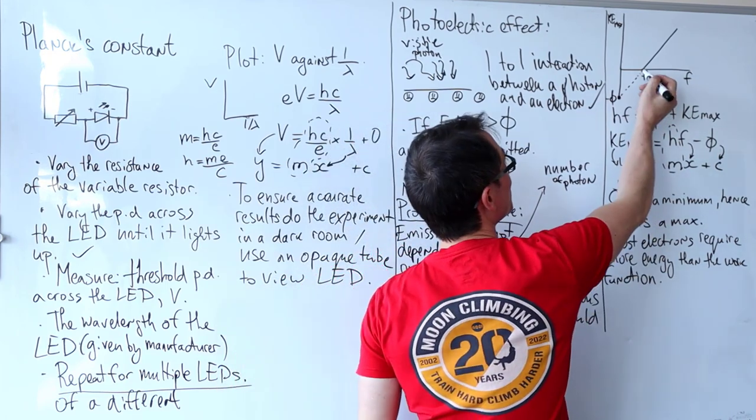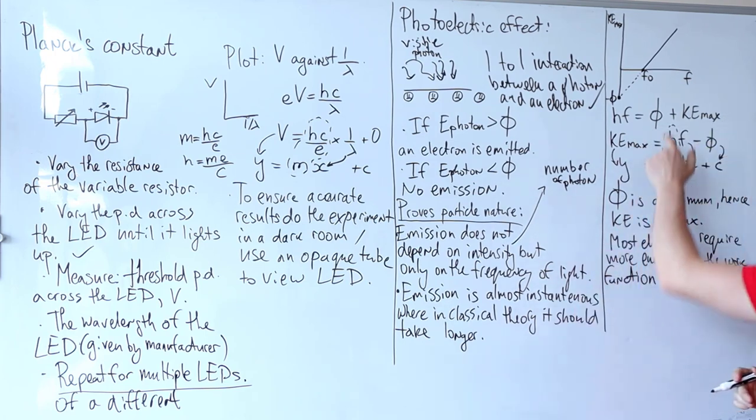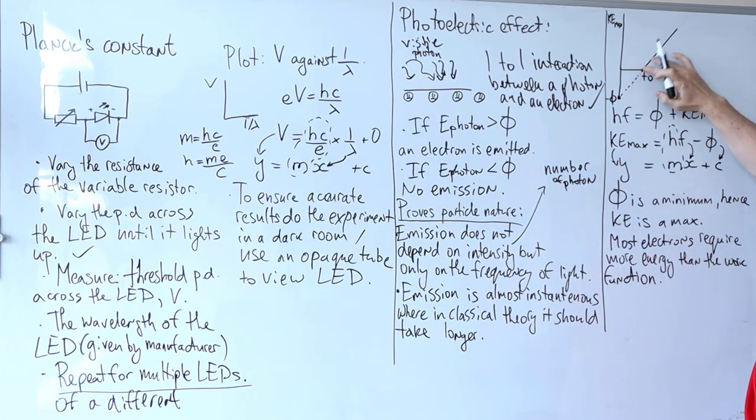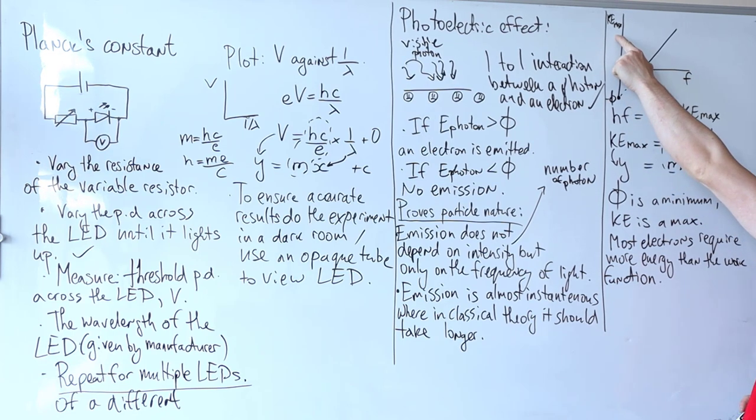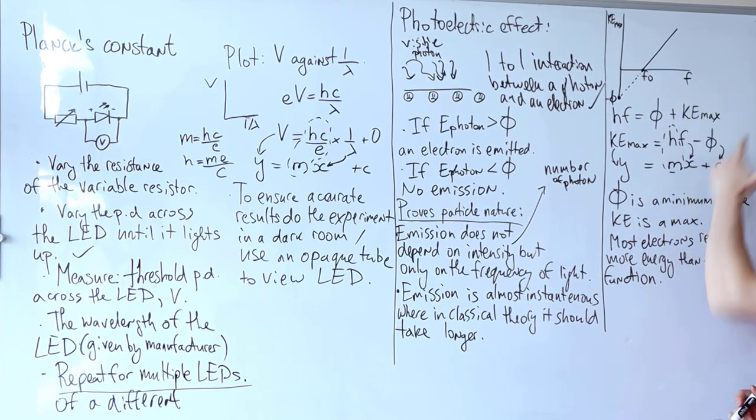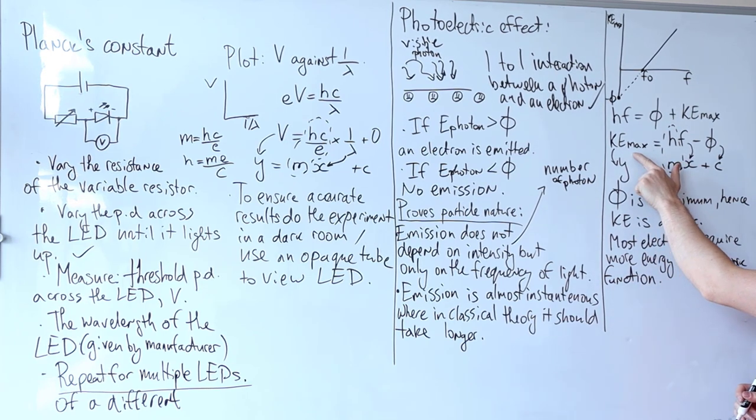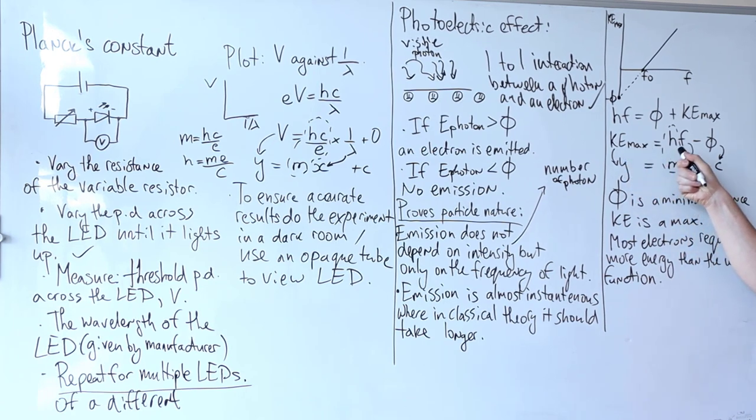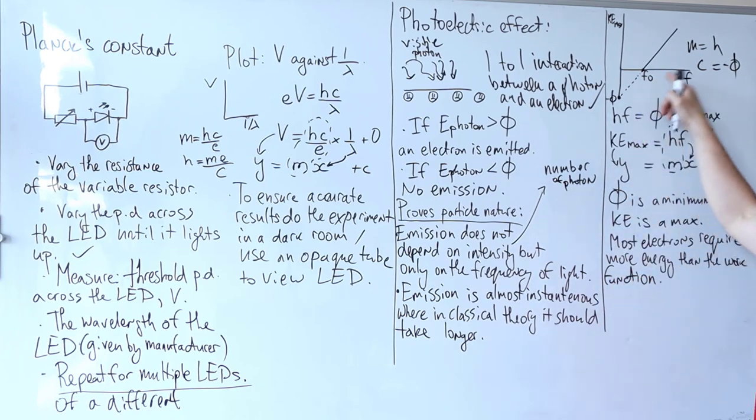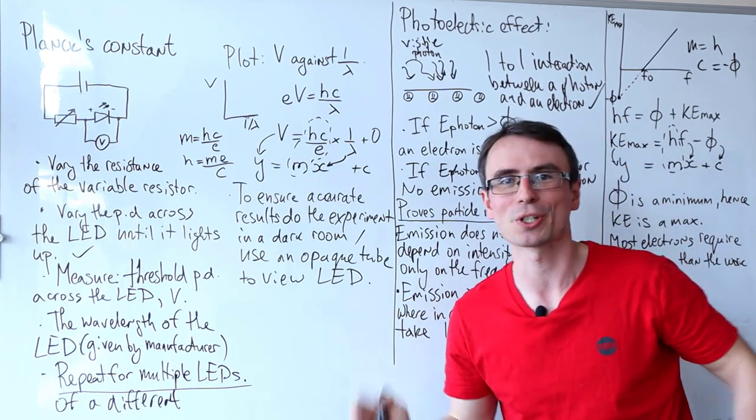A couple of features. First of all, this here is our threshold frequency. Why is it our threshold frequency? Well, because above that you actually start to get some electrons being emitted with some maximum kinetic energy. If I have k max on the y-axis against frequency on the x-axis, I can rearrange Einstein's equation for it. What I get is that k max is equal to hf take away the work function. If this is on the y-axis and f is on the x-axis, this means that our gradient m is equal to Planck's constant, and our intercept c is actually the negative of the work function.